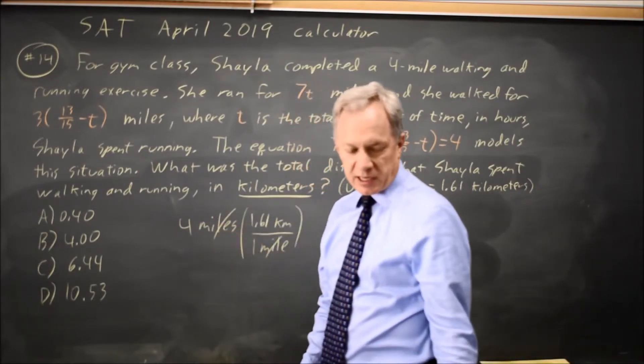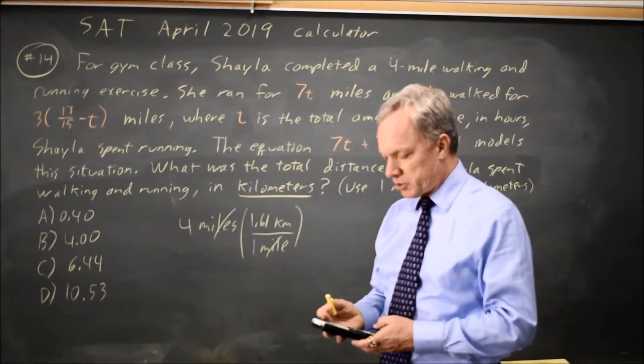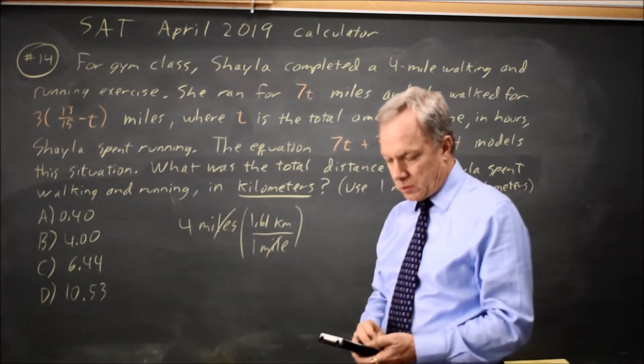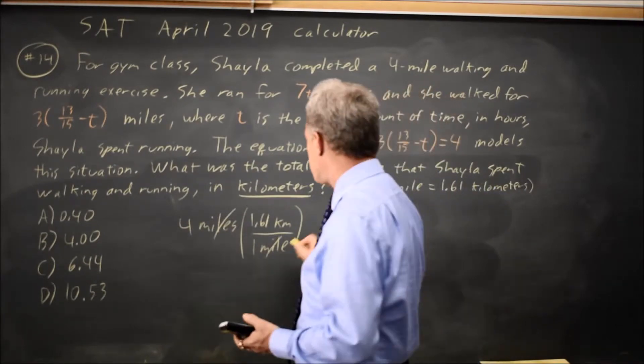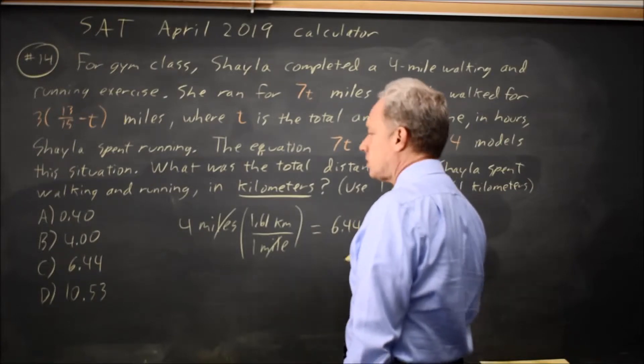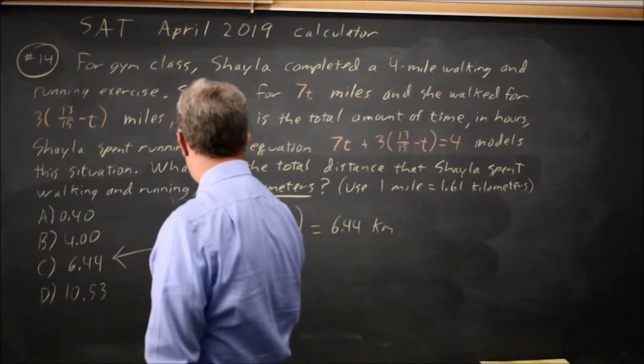Miles cancel, so my answer will be four times 1.61, which is 6.44 in kilometers. That would be choice C.